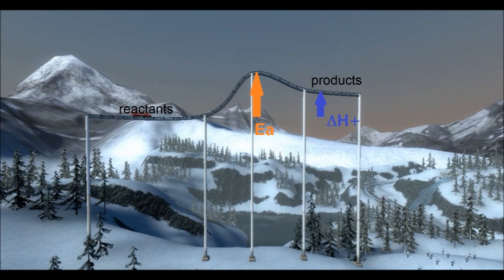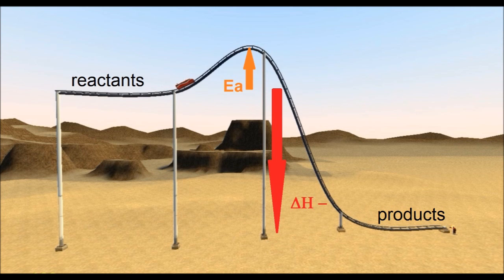So this is the energy diagram for the endothermic reaction. Notice how the minimum energy required for a reaction to occur is labelled Ea, or the activation energy, and the difference in energy between the reactants and products is delta H. In this case, it's positive — it's endothermic.